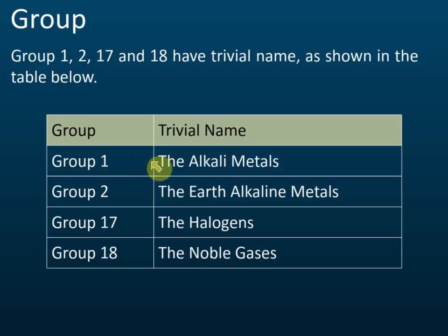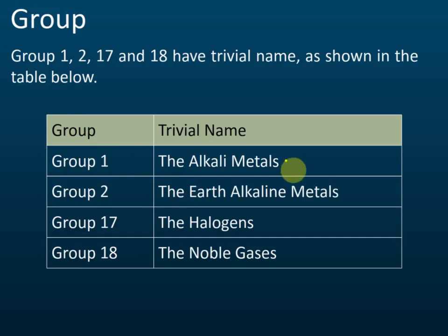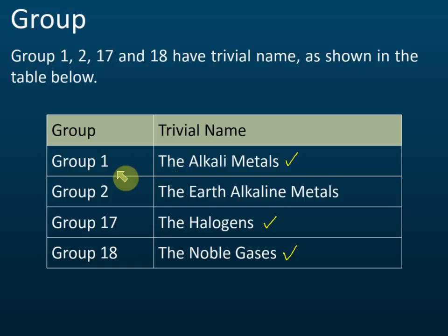For SPM, you need to know Groups 1, 17, and 18. Group 2 is optional if you can't memorize it. Make sure you remember: alkali metals for Group 1, halogens for Group 17, and noble gases for Group 18, as these trivial names will be asked in the exam.